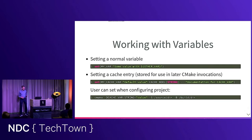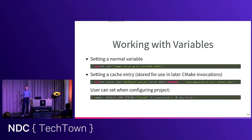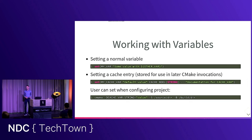Variables: we'll use them a lot. Assigning to a variable is done with the set command. There are also cache variables — they are stored between invocations of CMake. That means you can store information discovered during the configuration phase and use it in the build phase. You can also supply a value for a cache variable on the command line to tune your build configuration.